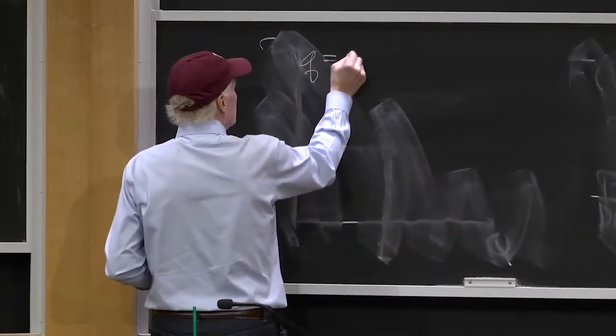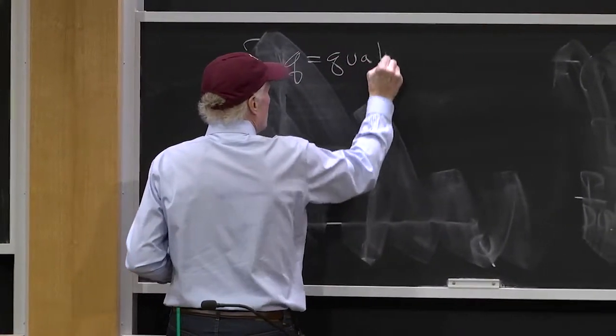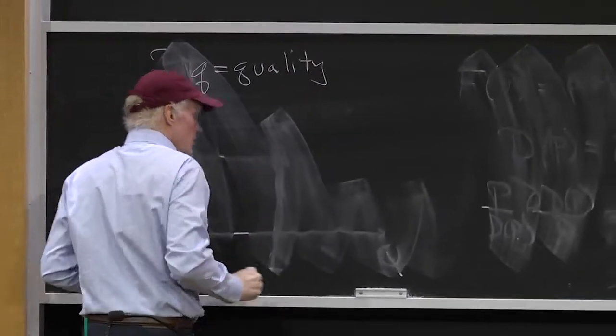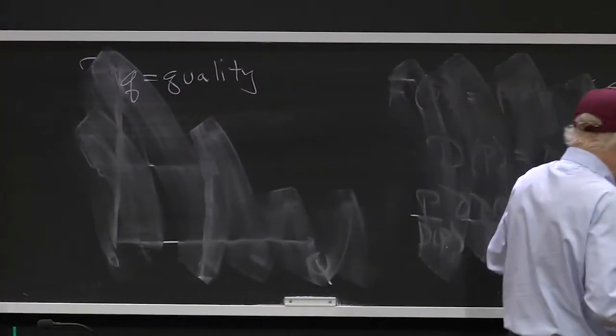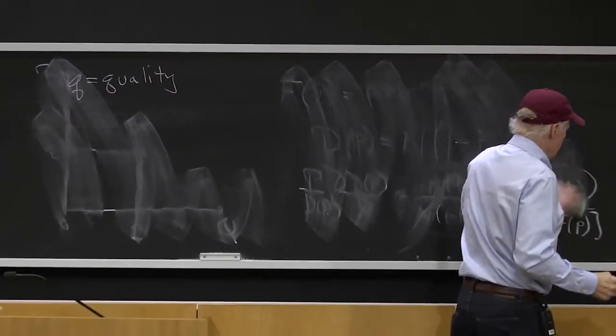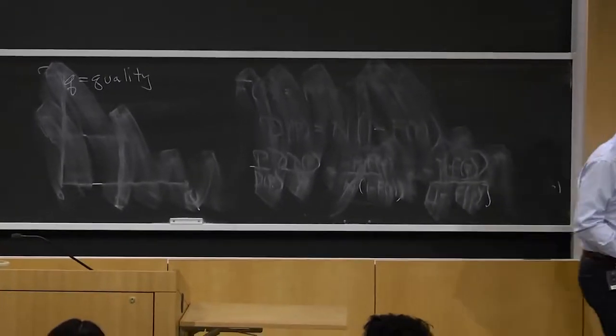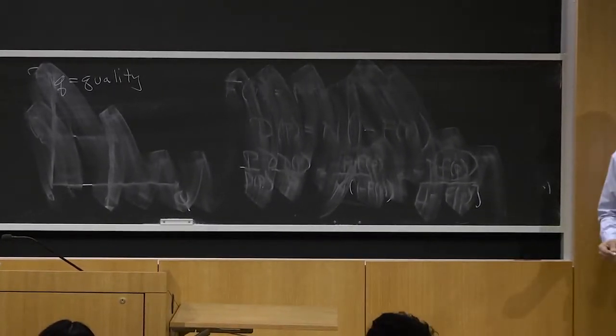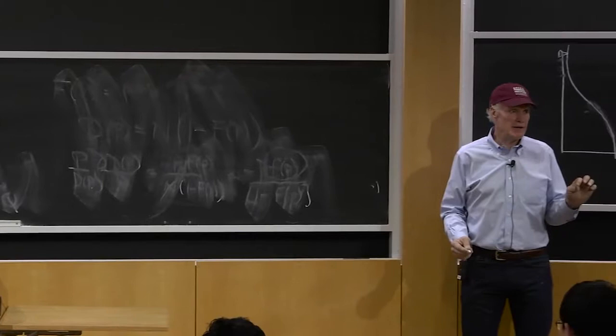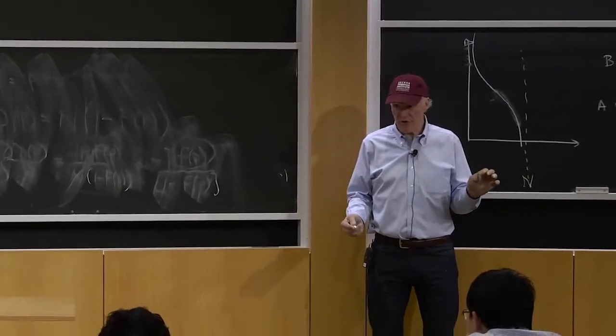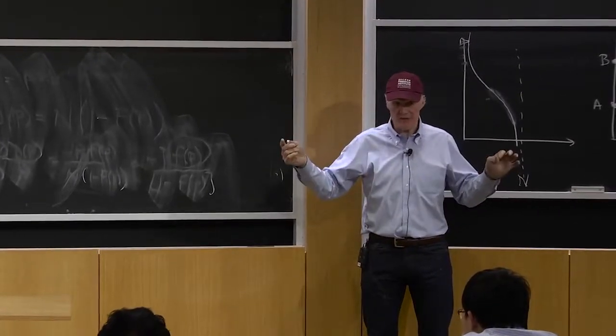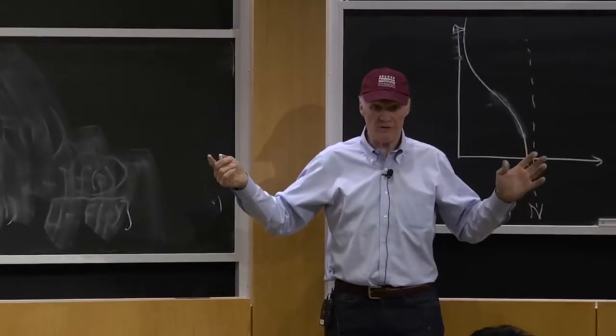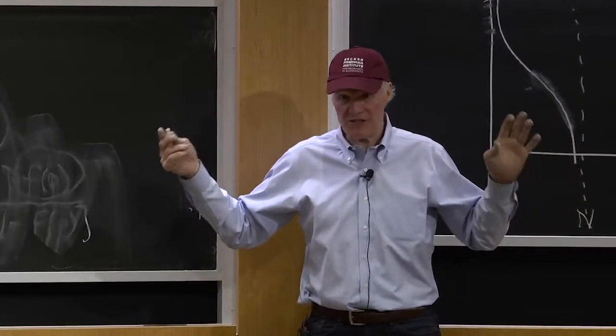So Q equals quality. People are going to decide they're only going to buy one unit, right? So they're only going to buy one, but they get a choice of what quality they're going to buy. Now there's no reason we couldn't have them choosing multiple units and even multiple qualities. That's an okay model, it's just complicated.